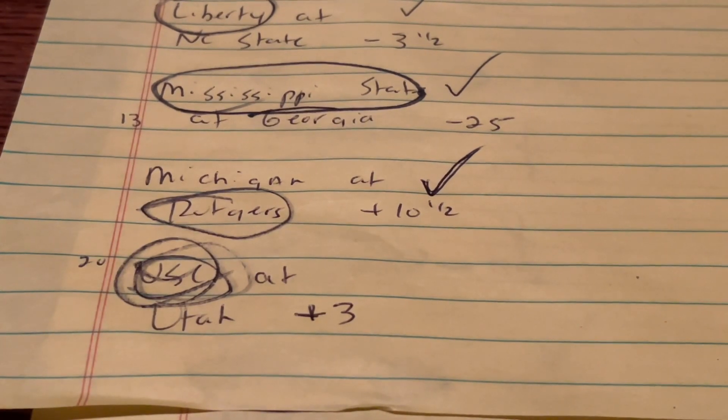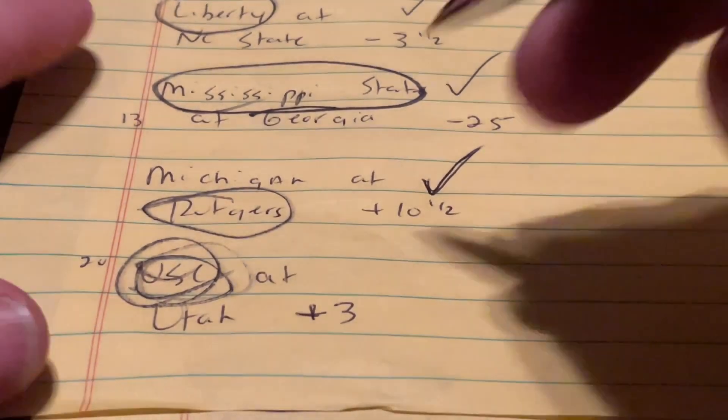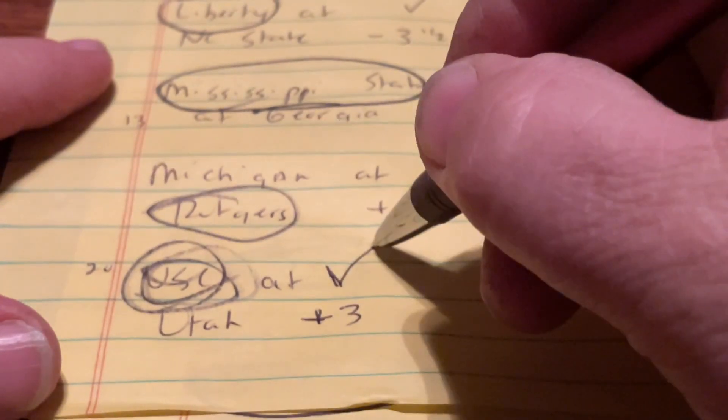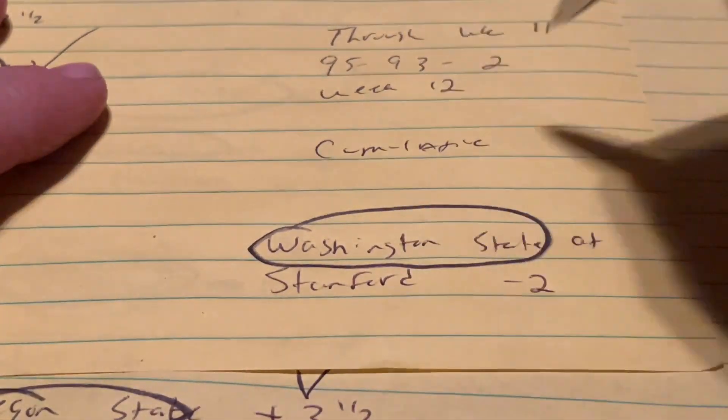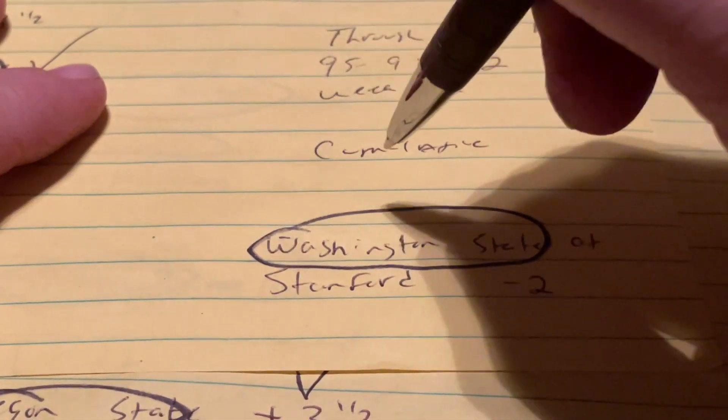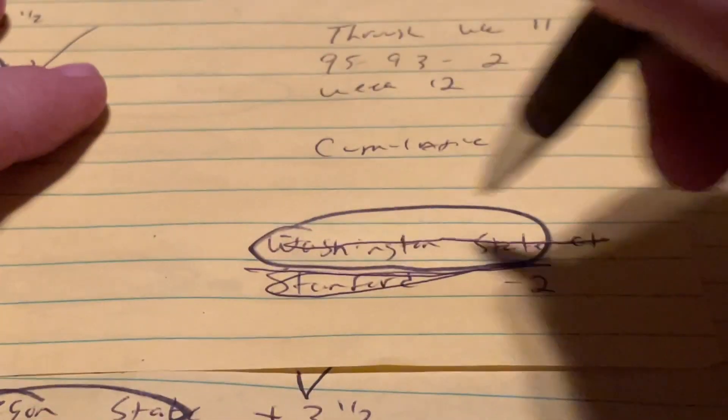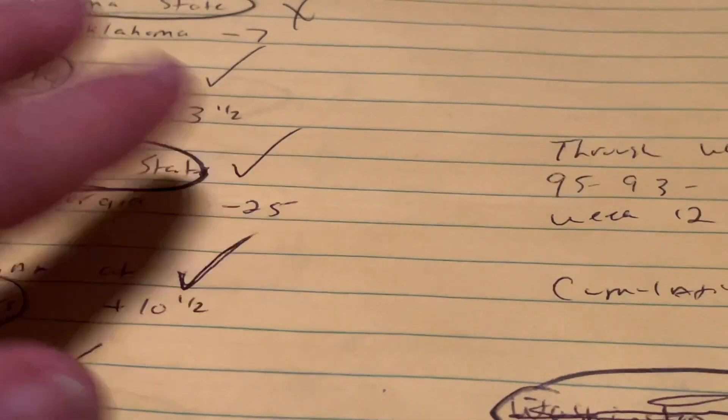USC and Utah. USC blows Utah out. 33-17 win by the Trojans. So that pick was correct. And then the final one where I had Washington State covered against Stanford. Stanford. No need to stutter it. That game was canceled.